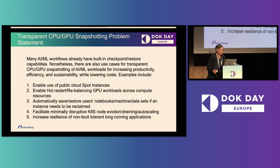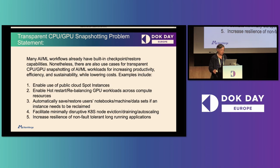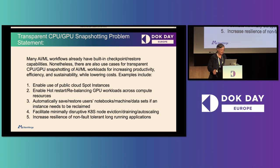Use cases we've uncovered include being able to run AI/ML workloads on Kubernetes and take advantage of spot instances on public clouds. People also want to be able to hot restart and rebalance GPU workloads across compute resources. Third is to automatically save and restore users' Jupyter notebooks and machine datasets — for example, if an instance in the public cloud gets reclaimed or they go home at night, we can save the state and bring it back up the next day.